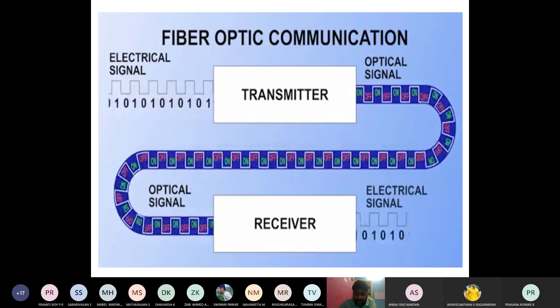When the optical signal satisfies the total internal reflection condition, it reaches the receiving end without any loss. The receiver also has internal circuits that convert the optical signal back into electrical pulses. Whatever initial input we subject, that same initial input is collected at the receiving end. The conversion happens with the help of the transmitter and the receiver.